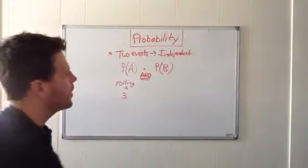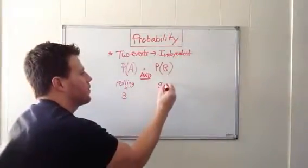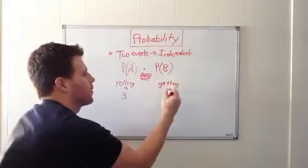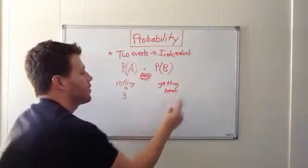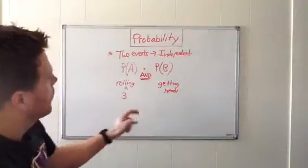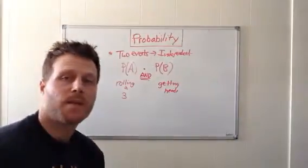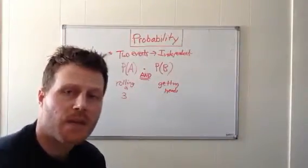and the probability of getting heads when flipping a coin. Those are our two independent events. We're going to flip a coin and roll the die. There are six possible numbers we can get when we roll the die. What's the probability of getting a three? That would be one out